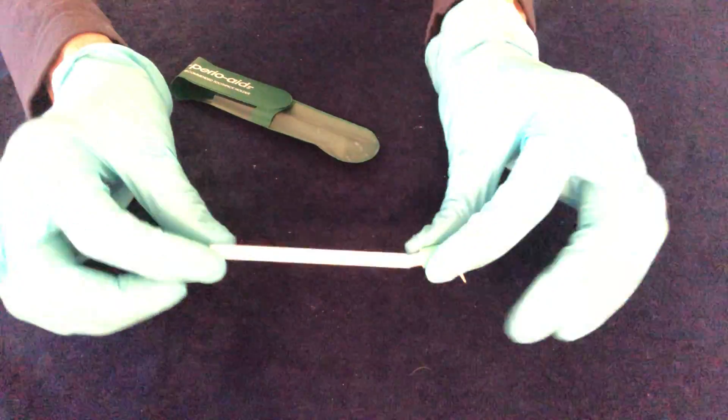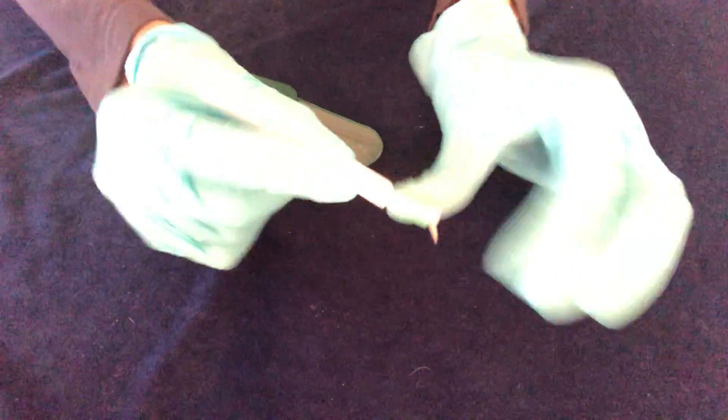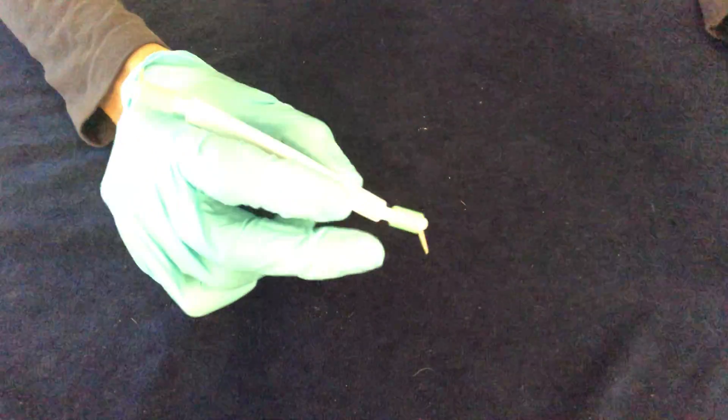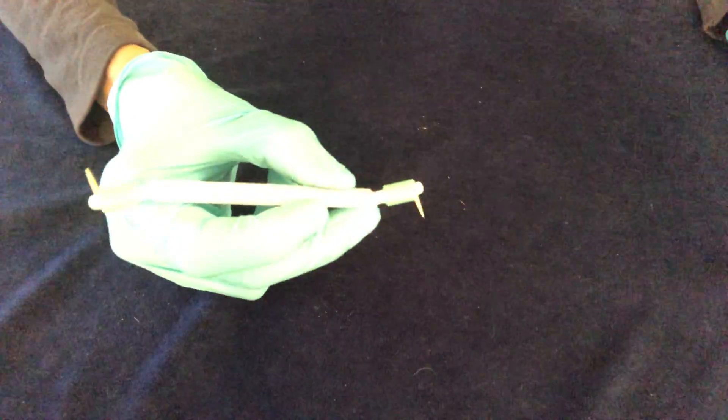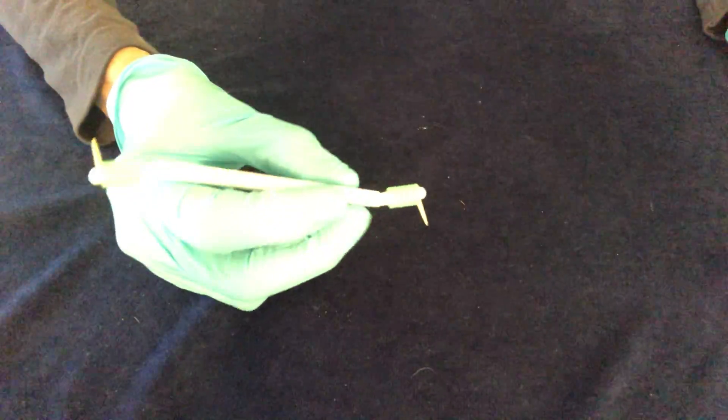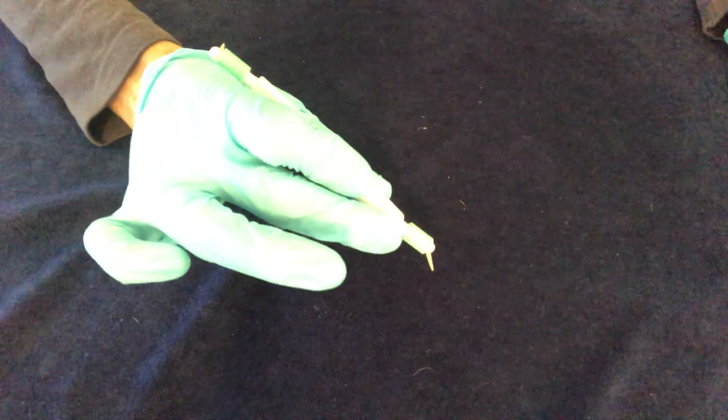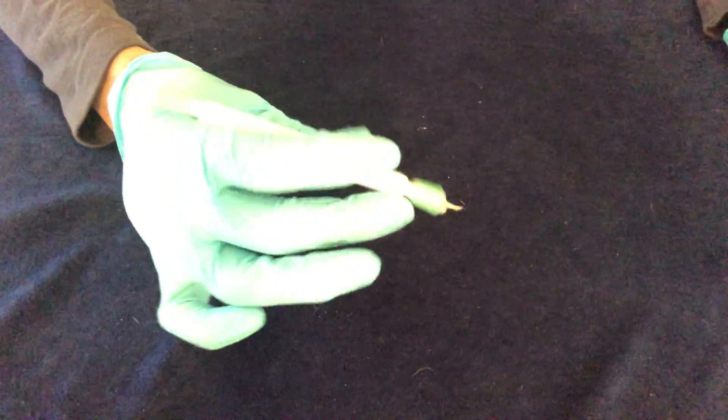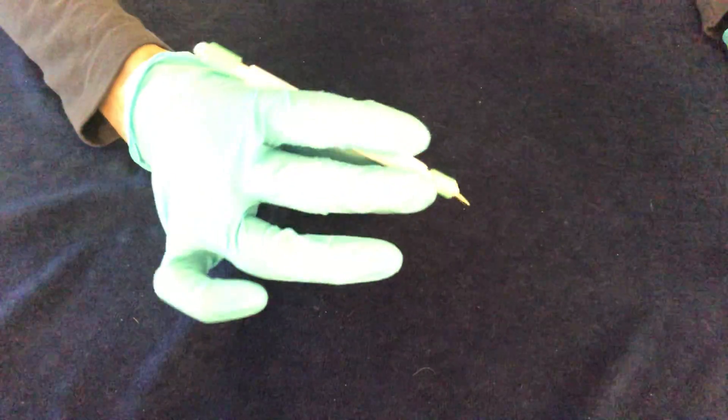You want to hold this with what we call the modified pen grasp. We hold a pen or pencil with two fingers like this. Modified pen grasp is with three fingers. You can hold it with your knuckles, tips of your fingertips, cradle it this way, roll it around. Just practice rolling it around in your hands.